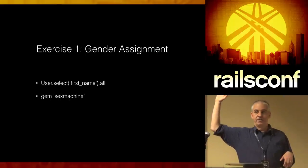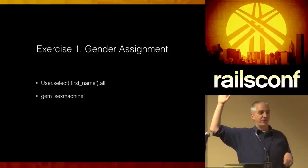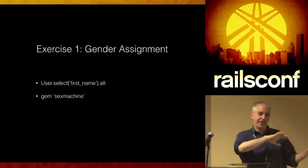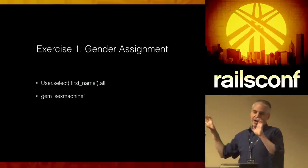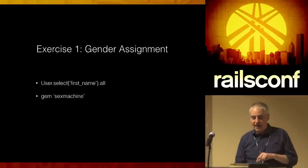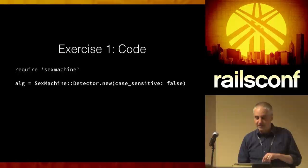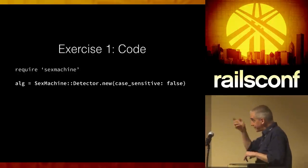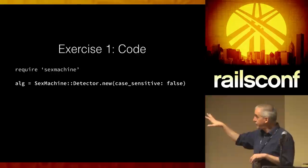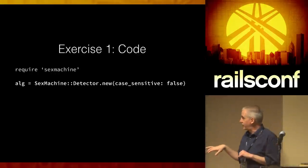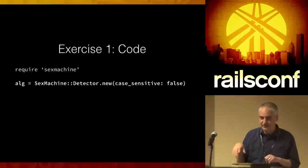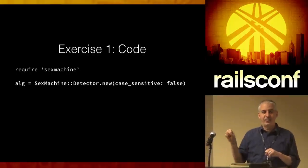There should be at least someone nearby that you can see. I'm going to explain it while people are trying to install the gems from the repo. Basically, sex_machine is pretty trivial. You create a detector — there are a couple of cool things like case sensitivity, and you can also pass it locales, because different names are masculine or feminine in different locales.